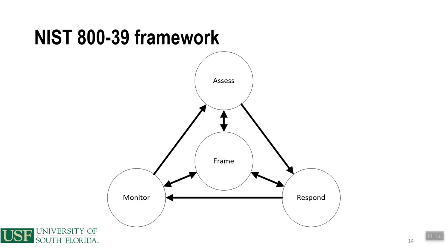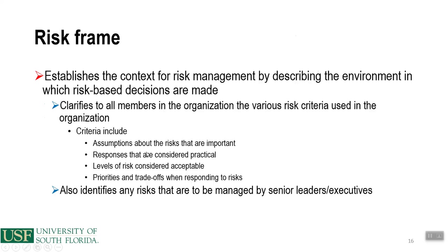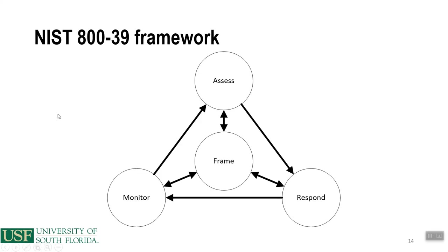The NIST 839 framework has four components: the risk frame in the center, risk assessment, risk response, and ongoing risk monitoring. The risk frame establishes the context for risk management by describing the environment in which risk-based decisions are made. It clarifies risk criteria used in the organization — assumptions about important risks, responses considered practical, and levels of risk considered acceptable. It also identifies risks to be managed by senior leaders and executives.